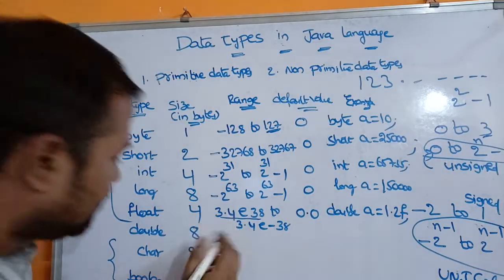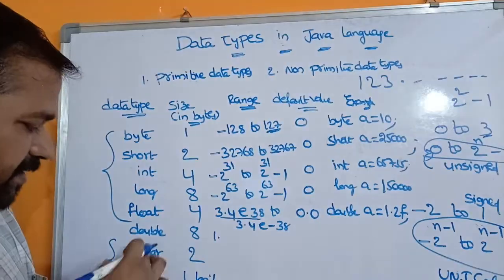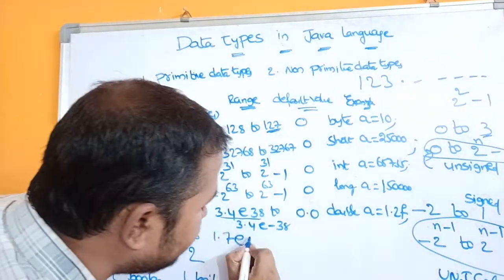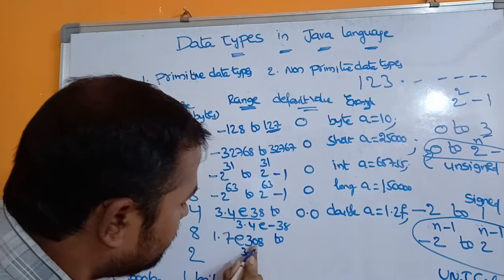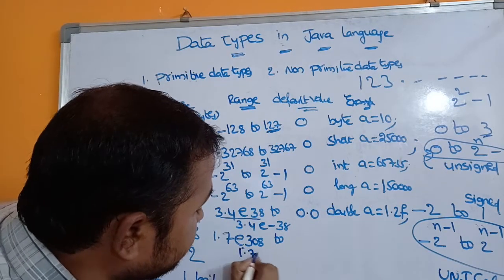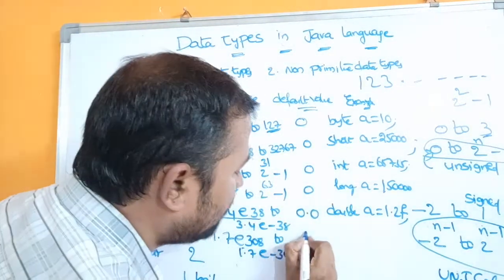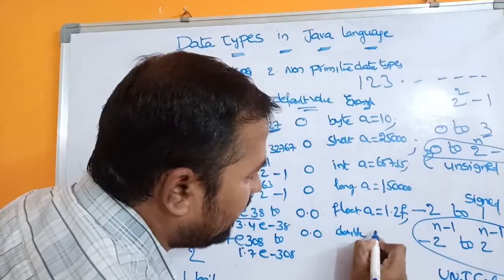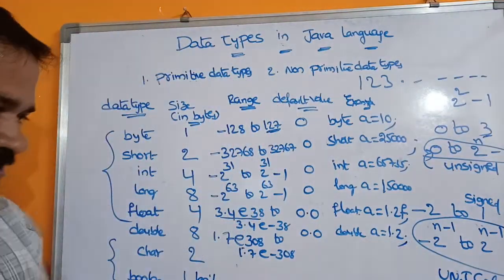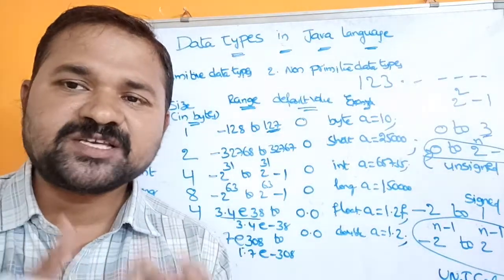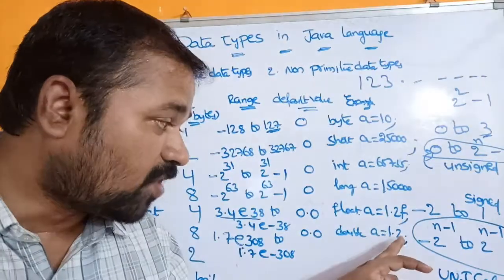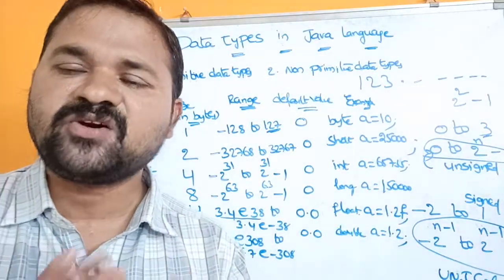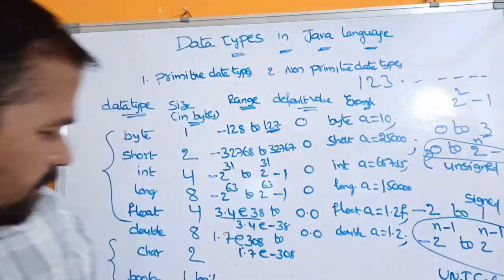The size of double is 8 bytes. The range of double is easy to remember: take 3.4 divided by 2 = 1.7, and between 3 and 8 place 0 to get 308. So the range of double is 1.7e-308 to 1.7e+308. The default value is 0.0. For double, there is no need to suffix with 'd' because the Java compiler by default treats that value as a double. But you can optionally use small 'd' or capital 'D'.